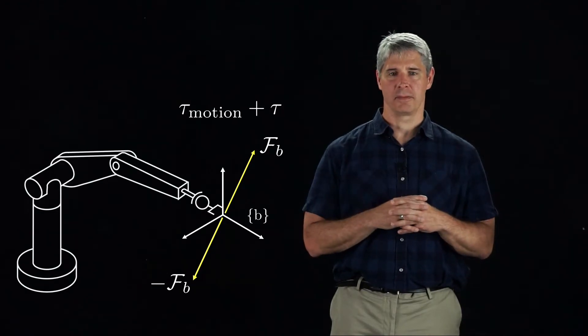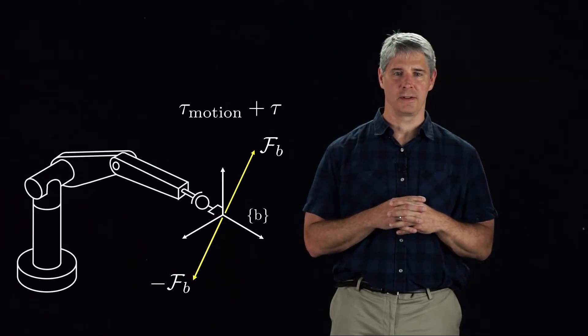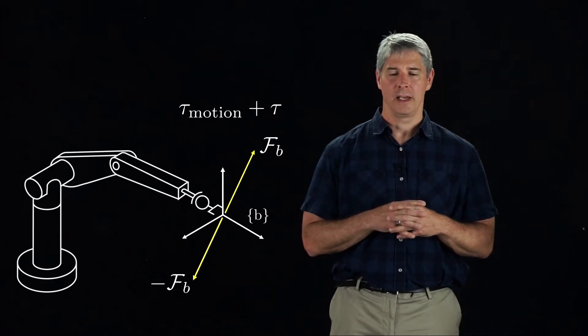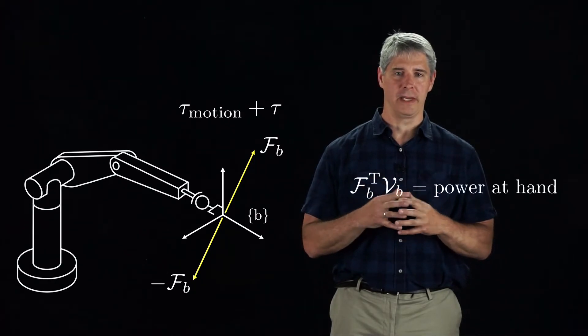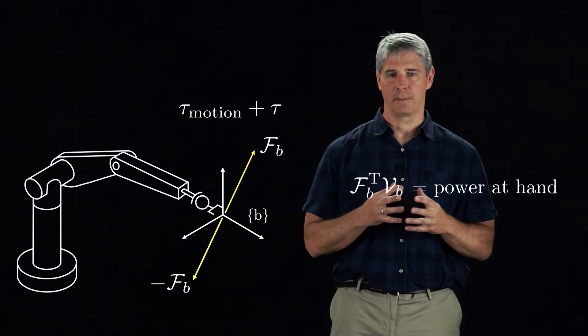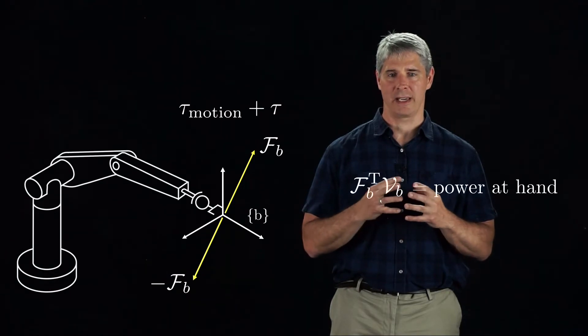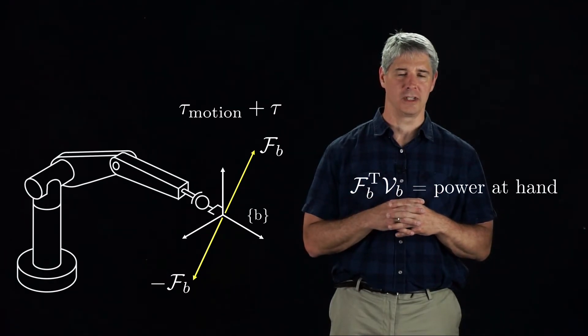To find this relationship, recall from physics that force times velocity is power. In the B frame, the wrench Fb created by the motors multiplies the twist Vb to get the mechanical power produced or consumed at the hand.